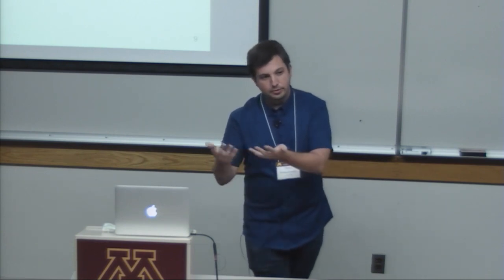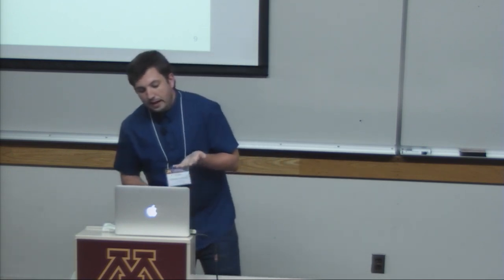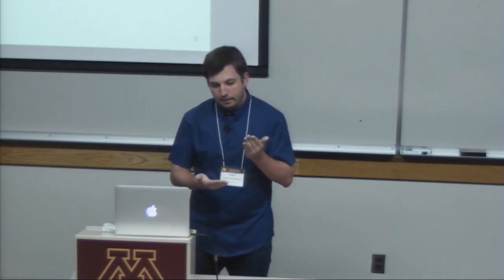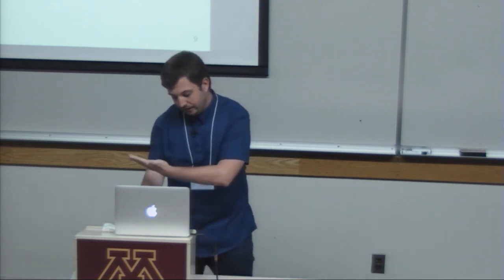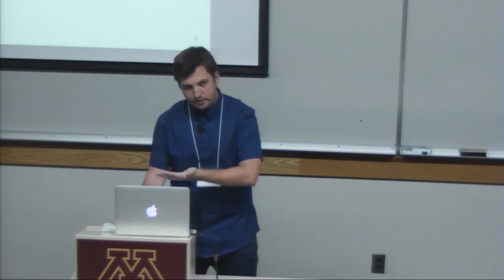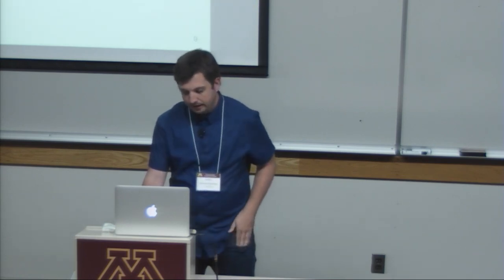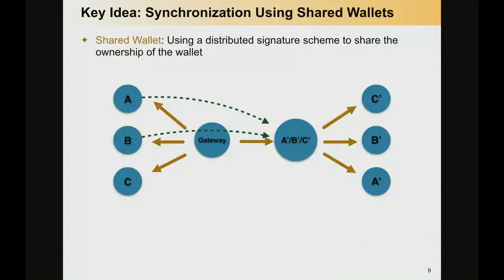Whenever a transaction involving this shared wallet has to be accepted, each of the participants has to accept it individually — only then is the transaction valid. So either every participant in the shared wallet accepts the transaction, or the transaction is not valid. Having that allows us to have a synchronization round. In this example, A could pay first to the shared wallet, then B, then C. Only when the shared wallet has enough incoming credit can participants redistribute the credit to the output wallets.